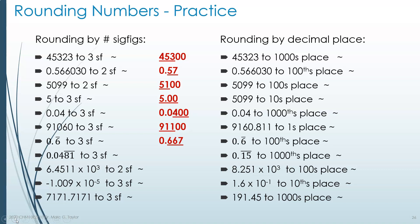0.0481, where the 8 and 1 are repeating — meaning the number is 0.04818181... forever. But we only want three significant digits. Our three sig figs are 4, 8, 1. We would write 0.0481, however the very next digit we know will be an 8 because the 8, 1 is repeating. That 8 tells us to round the 1 up, so this is recorded as 0.0482.